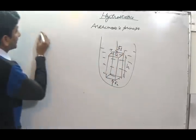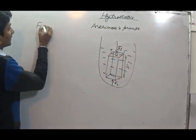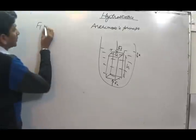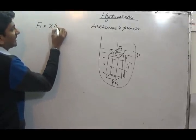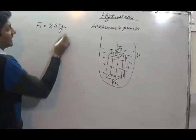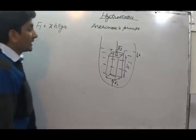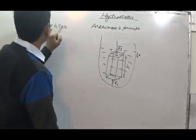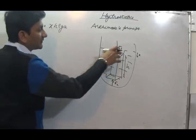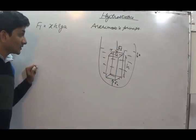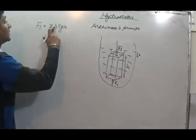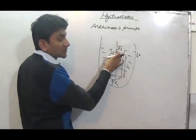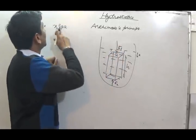Now this force F1 will be given by: let us say this depth is X and the height is H. So F1 will be given by X, rho, G, A. A is the area of cross-section, so A into X will be the volume. X is the height of the water, A is the cross-section of this body, and rho is the density of water.